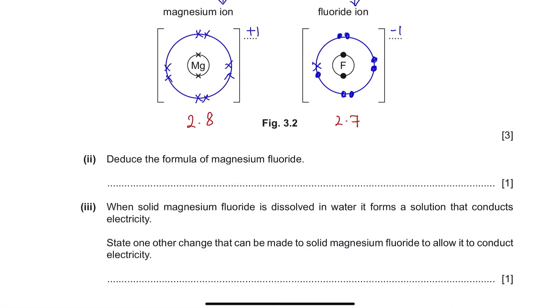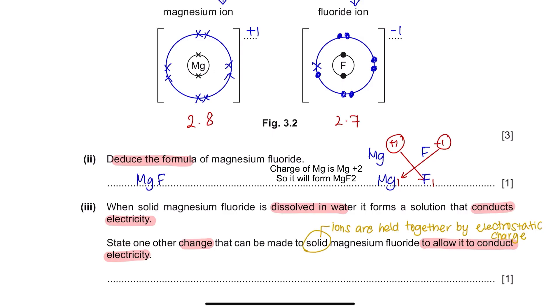Part 2. Deduce the formula of magnesium fluoride. To find the formula of a compound, we will just cross the oxidation number to the opposite side of each element. And this leaves us with MgF2. Part 3. When solid magnesium fluoride is dissolved in water, it forms a solution that conducts electricity. State one other change that can be made to solid magnesium fluoride to allow it to conduct electricity. In solid state, ions are held together by strong electrostatic force. So, there are no free-moving electrons. And this does not conduct electricity. So, the changes that we can make to the solid magnesium fluoride is to change it into liquid. And this can be done by melting.